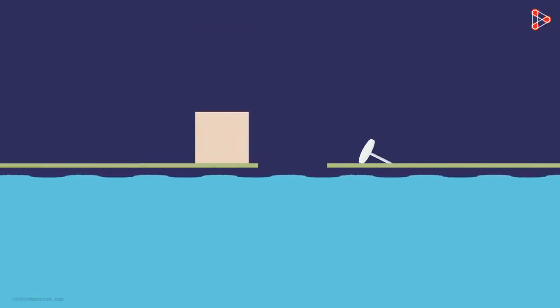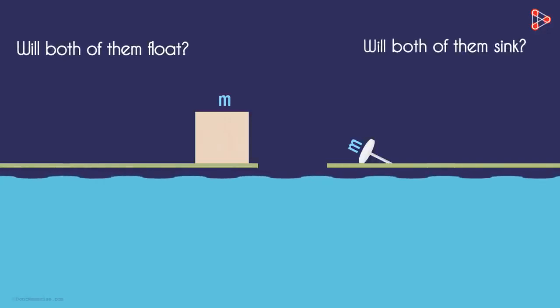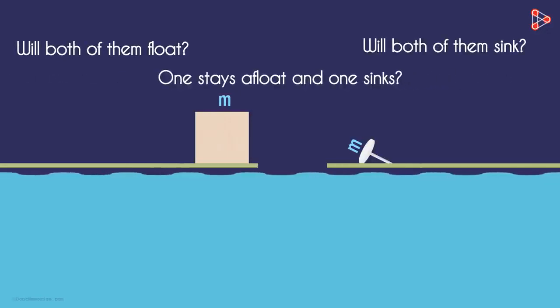This is the example we left at in the previous video. If we drop a piece of balsa wood and a metal pin of the same mass into the water, what will happen? Will both of them float or will both of them sink? Or one stays afloat and one sinks?